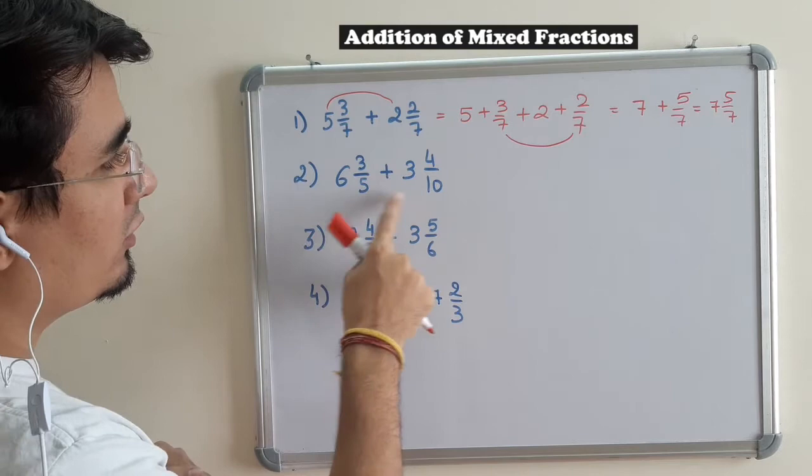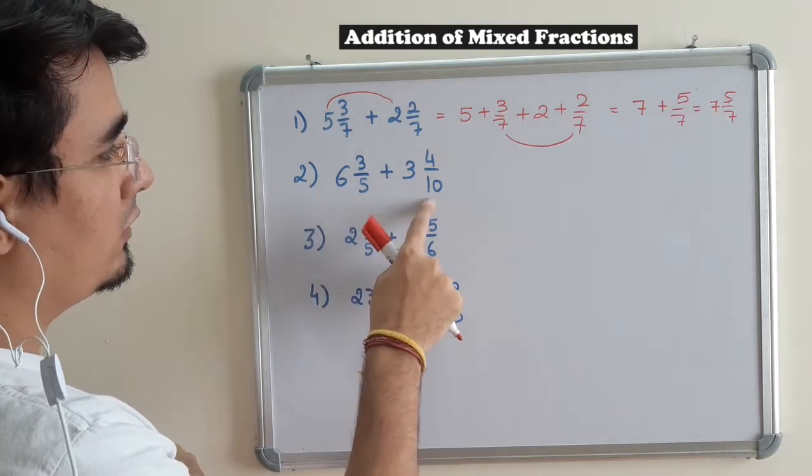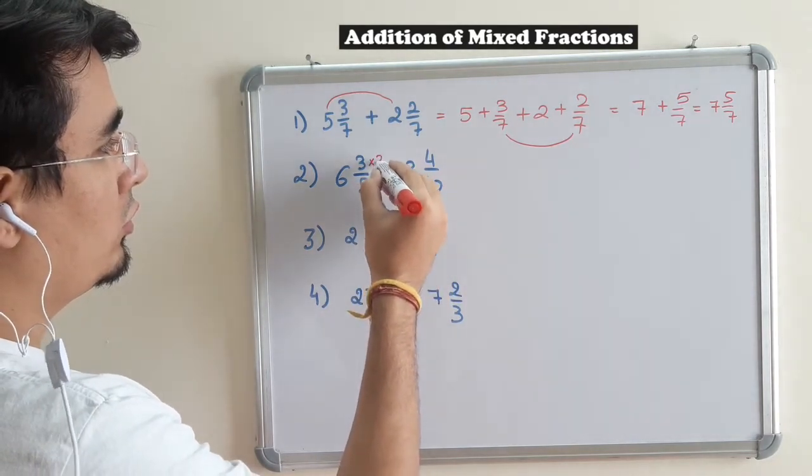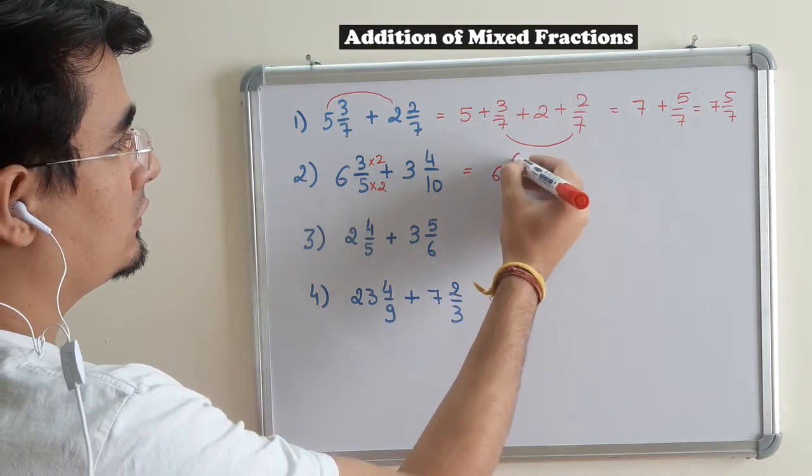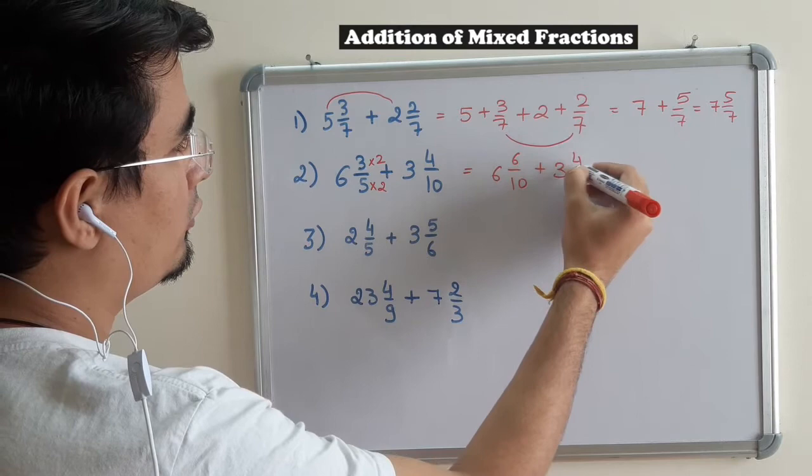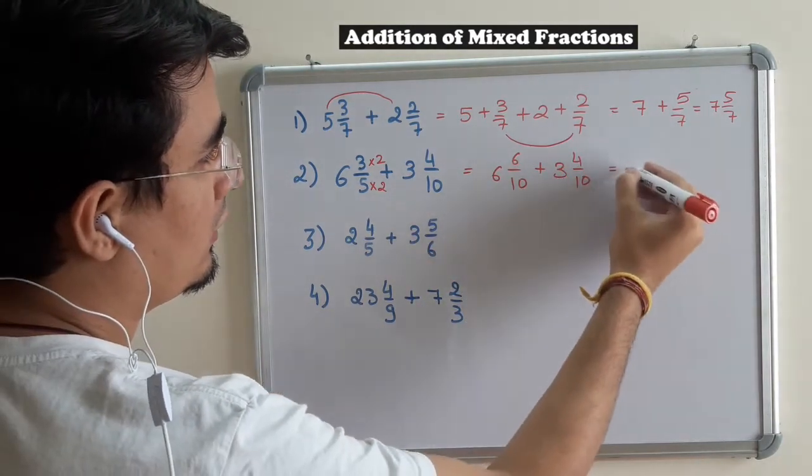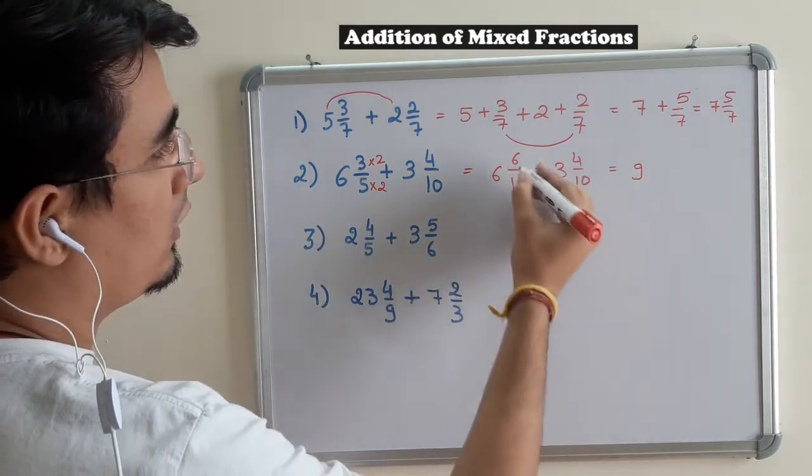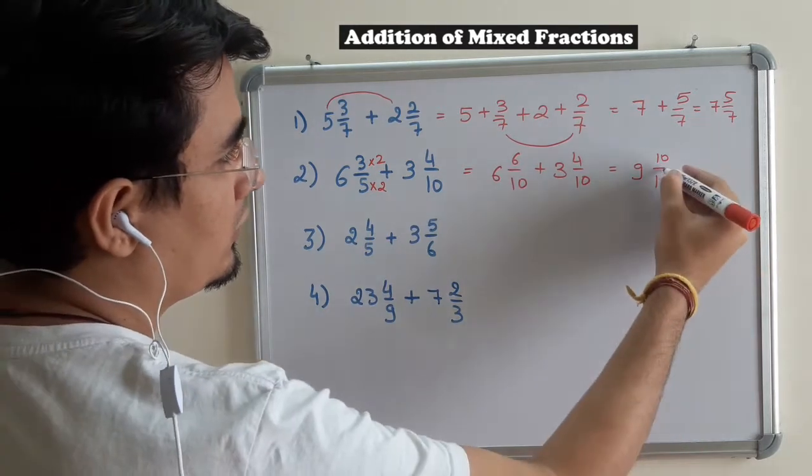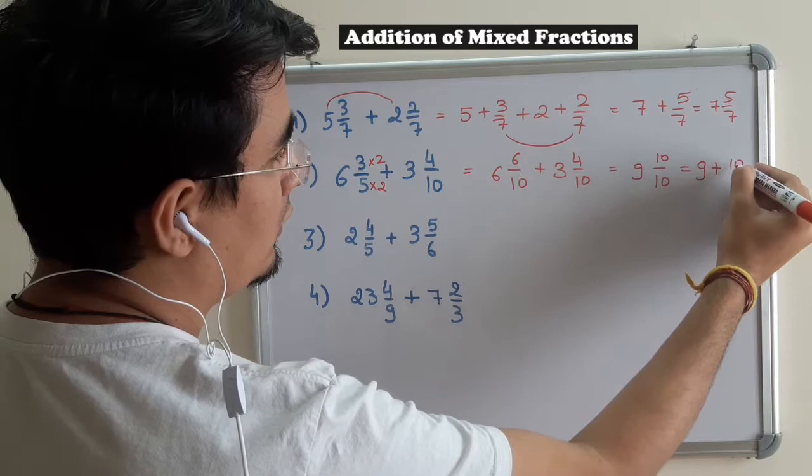Right now the denominator is different. So what should I do? I can take LCM of 5 and 7. If I multiply this number by 2, I will be getting 6, 6 by 10 plus 3, 4 by 10. Making sense? So 6 plus 3 is 9 and 6 plus 4 is 10 by 10.